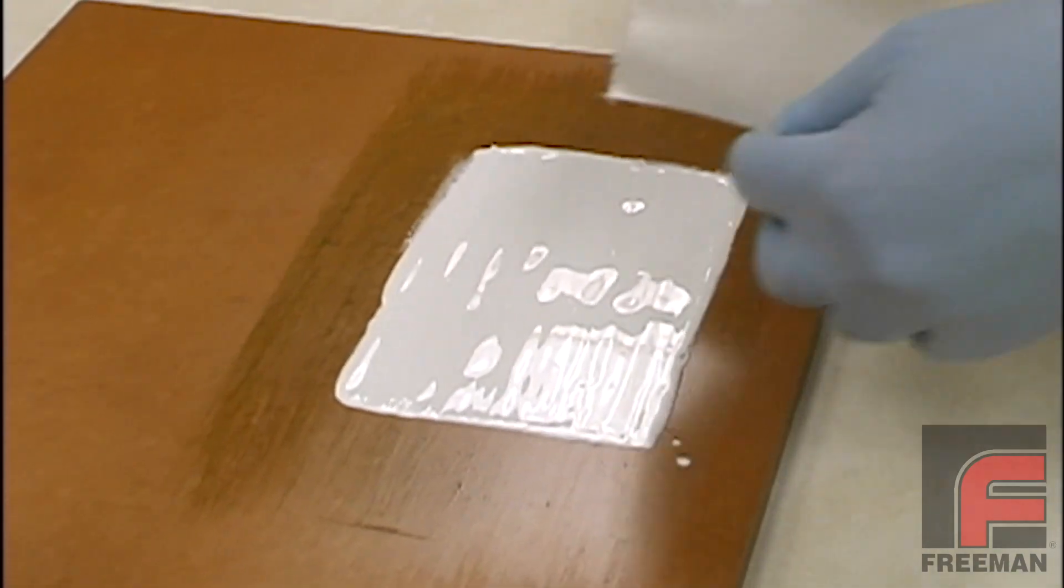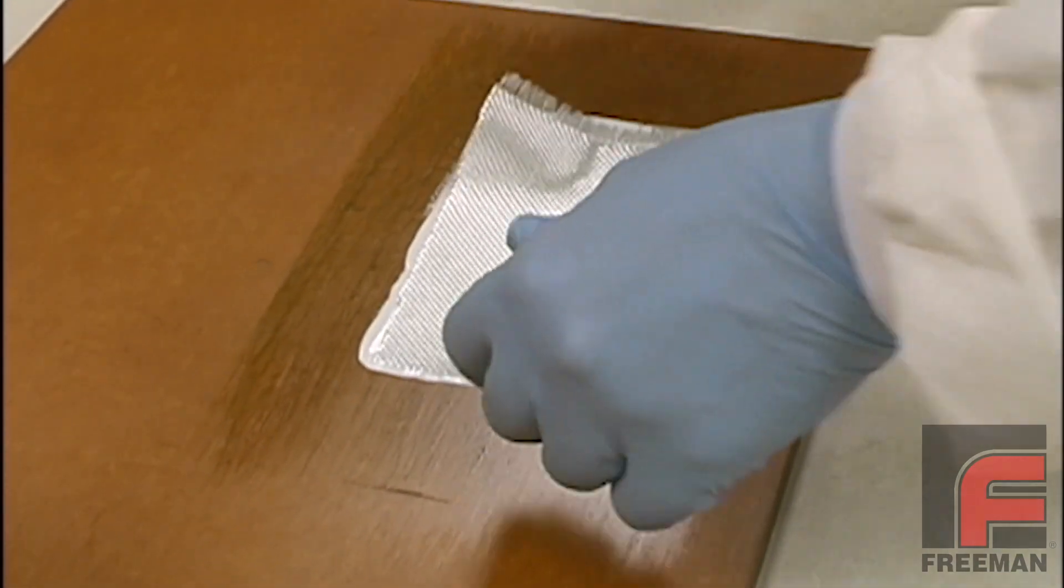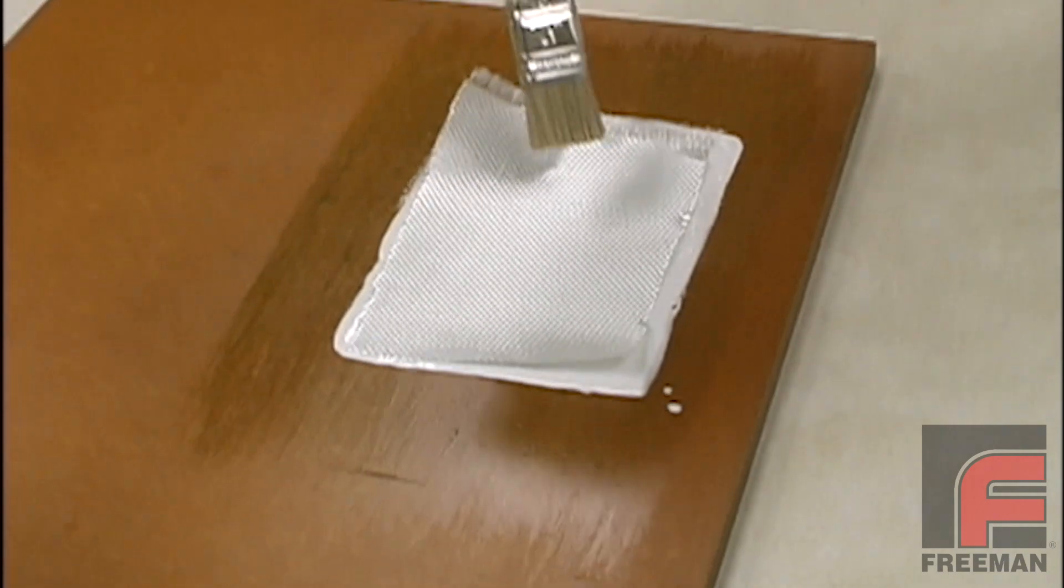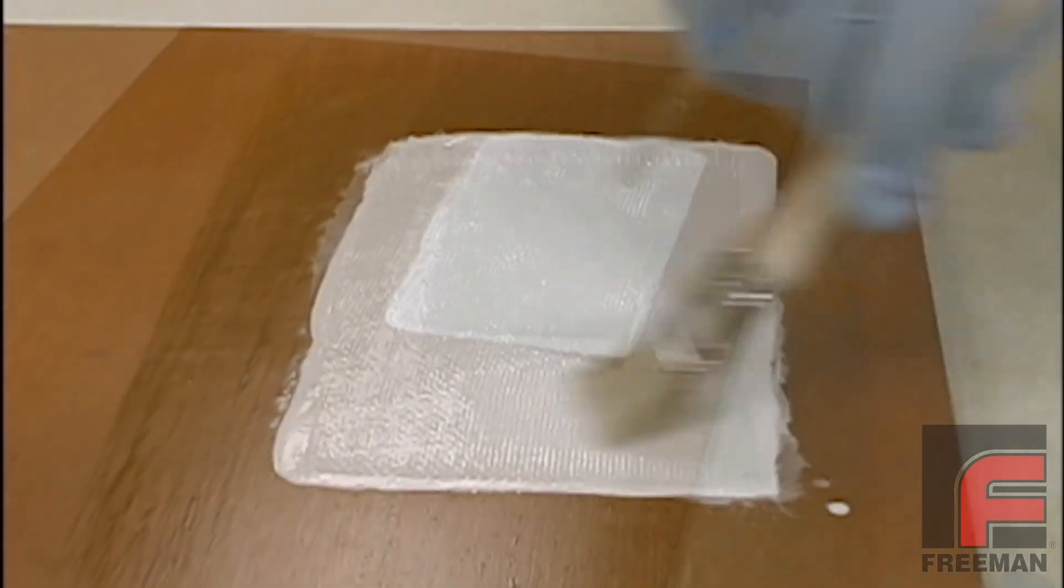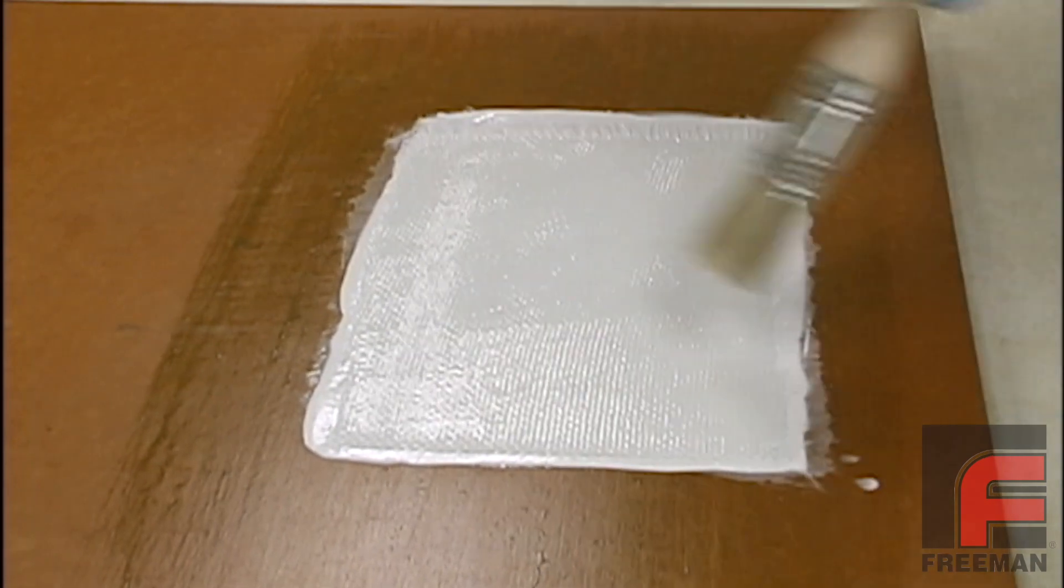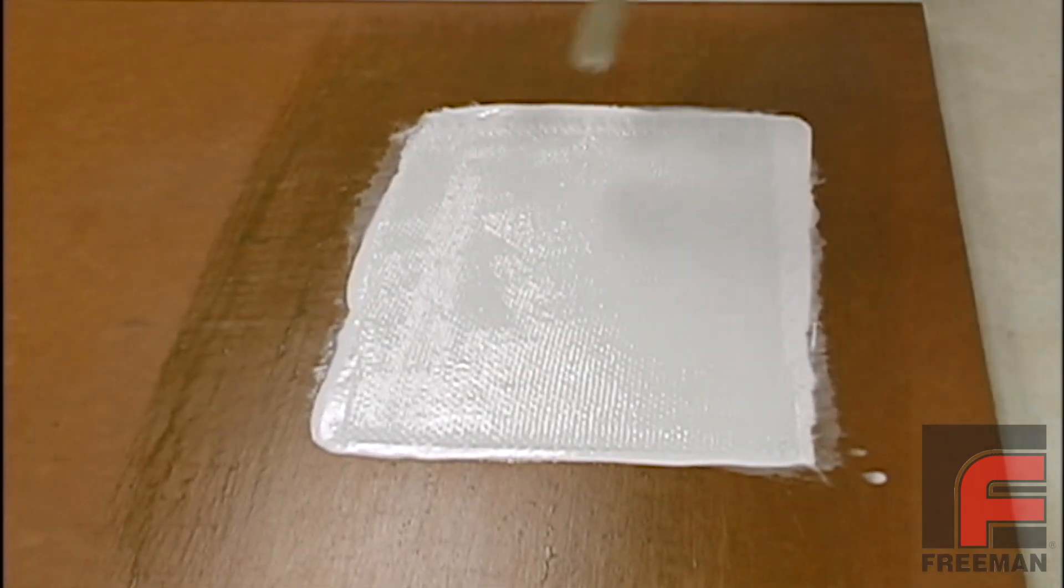Finally, we set the first layer of fiberglass cloth over the resin and we use the cut brush to bring the resin through the cloth. We are applying just enough pressure to get it through, but not too much to disturb the surface coat underneath.